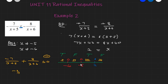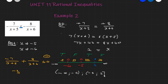Now we write the solution using all the true regions. True regions are: negative infinity to negative 6 (negative 6 not included), and negative 5 to 2 (negative 5 not inclusive, 2 inclusive). So the solution is (−∞, −6) ∪ (−5, 2]. That completes this rational inequality — for a lot of marks and not really difficult.